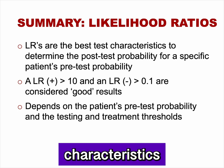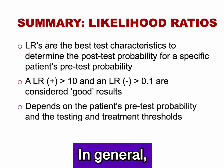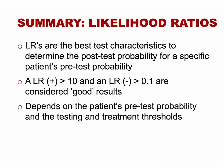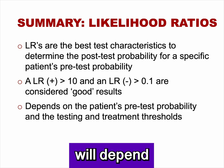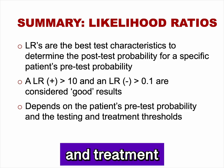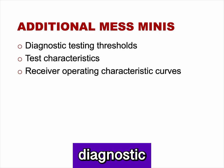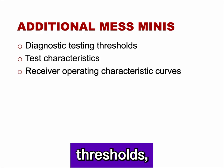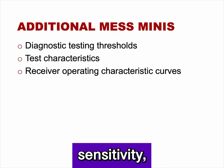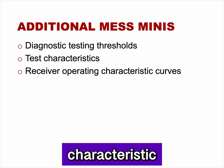Likelihood ratios are the best test characteristics to determine posttest probability of disease from a specific patient's pretest probability. In general, a likelihood ratio of a positive test greater than 10 and a likelihood ratio of a negative test less than 0.1 are considered good results, though how good depends on the patient's pretest probability and testing and treatment thresholds. Additional MESS Minis review diagnostic testing thresholds, sensitivity, specificity, predictive values, and receiver operating characteristic curves.